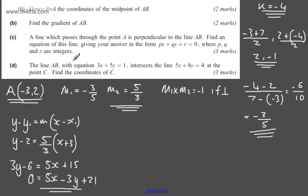In part D for three marks, we're told that line AB with equation 3x + 5y = 1 intersects the line 5x + 8y = 4 at the point C. We're asked to find the coordinates of C. So this is the case of simultaneous equations, and there are lots of different approaches.